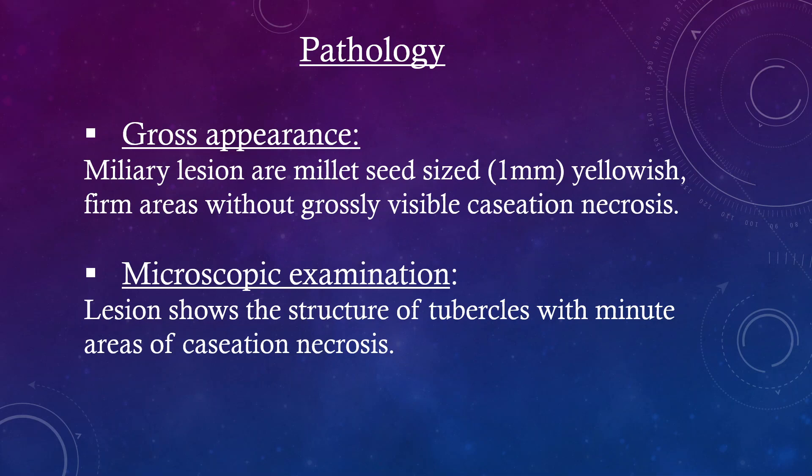Pathology — Gross appearance: Miliary lesions are millet seed-sized (1 mm), yellowish firm areas without grossly visible caseation necrosis. Microscopic examination: The lesion shows the structure of tubercles with minute areas of caseation necrosis.